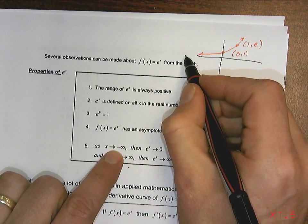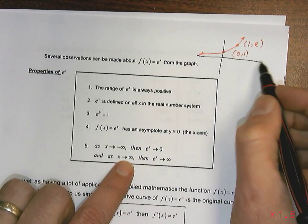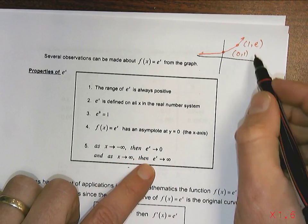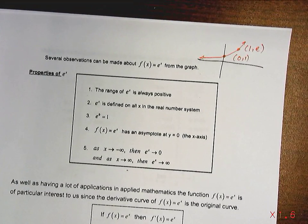As x gets closer and closer and closer to negative infinity, e to the x approaches 0. As x approaches positive infinity, e to the x is approaching positive infinity. So we'll stop here and we'll come back in just a moment.